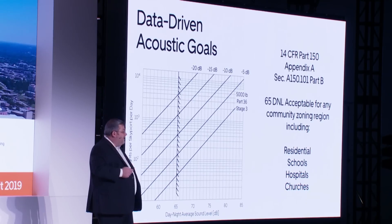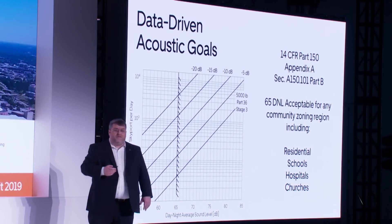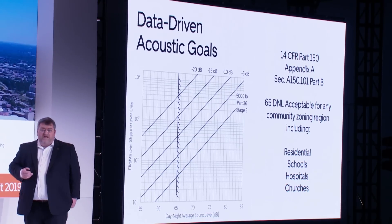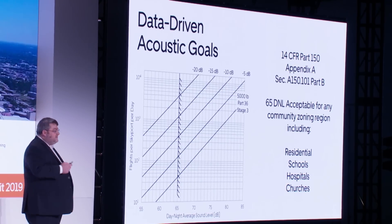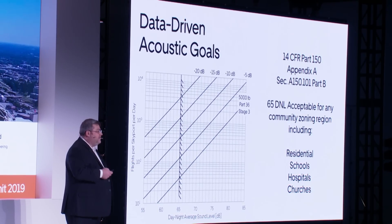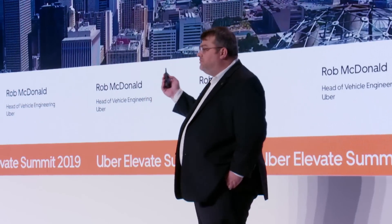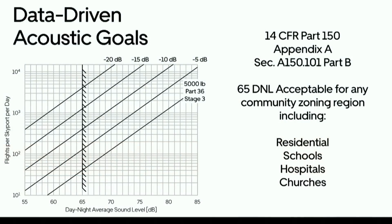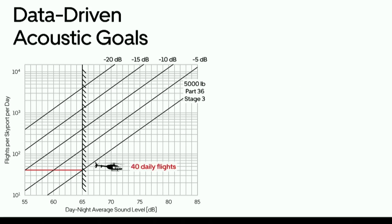Each shift enables more flights at the same DNL. Now near where the FAA defines DNL, they also go through and give us some recommendations. The FAA suggests that 65 dB DNL is acceptable for any community zoning region — churches, schools, neighborhoods, hospitals — any zoning region. 65 DNL is a suggestion that should be acceptable. And so that sets a target for us. If we put this together with our 5,000-pound Stage 3 helicopter and go to that 65 DNL limit, we would be limited to 40 flights per day.